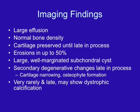Key imaging findings include a possible large joint effusion, though our patient did not demonstrate that. Bone density may be normal, and cartilage is often preserved until late in the process. Erosions can be seen in up to 50% of cases. Large, well-marginated subchondral cysts may be present, and secondary osteoarthritic changes — including cartilage narrowing and osteophyte formation — may occur late. Very rarely and late in the process, there may be dystrophic calcification.